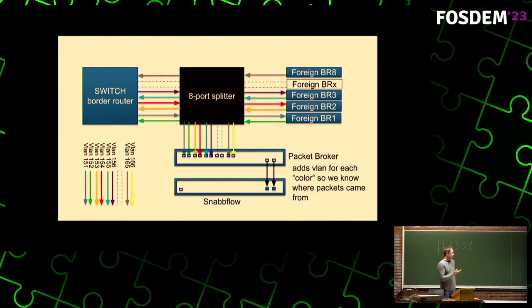These are now 200-gig ports between the broker and the exporter. We can easily add more ports if that's not sufficient, and on the SnapFlow exporter we can basically just add more cores to be able to scale.